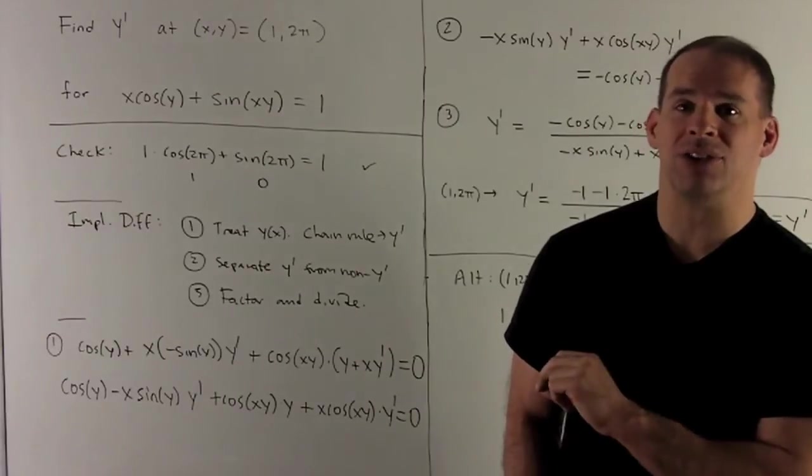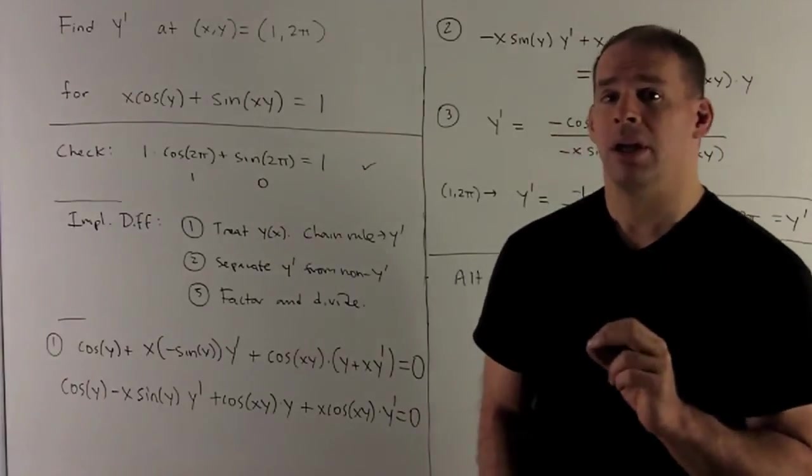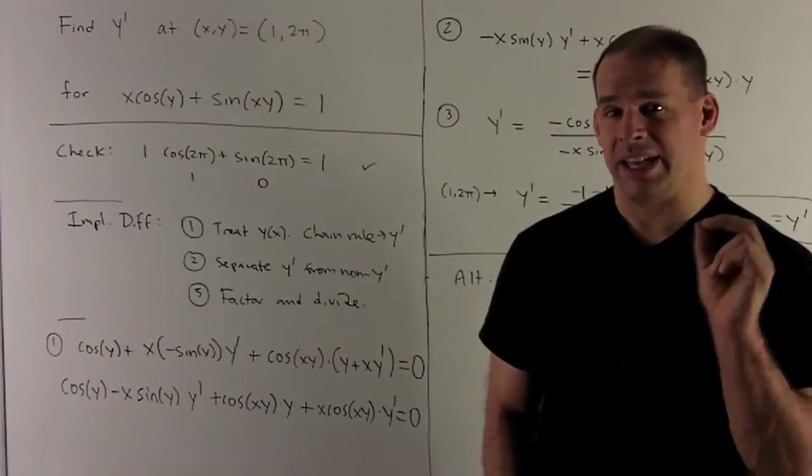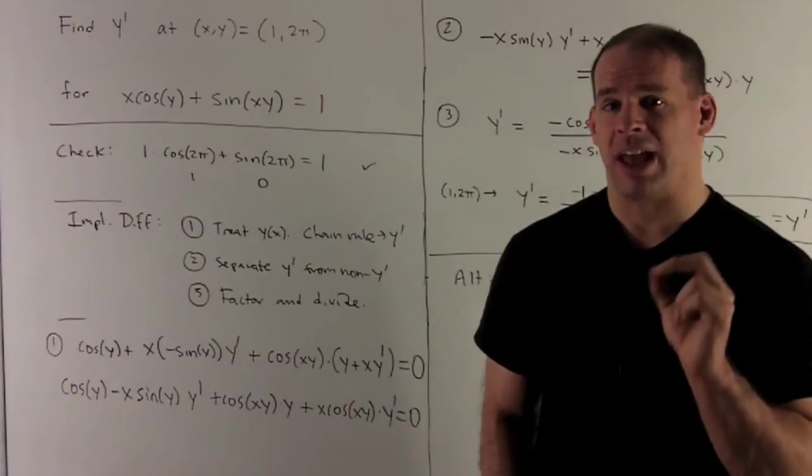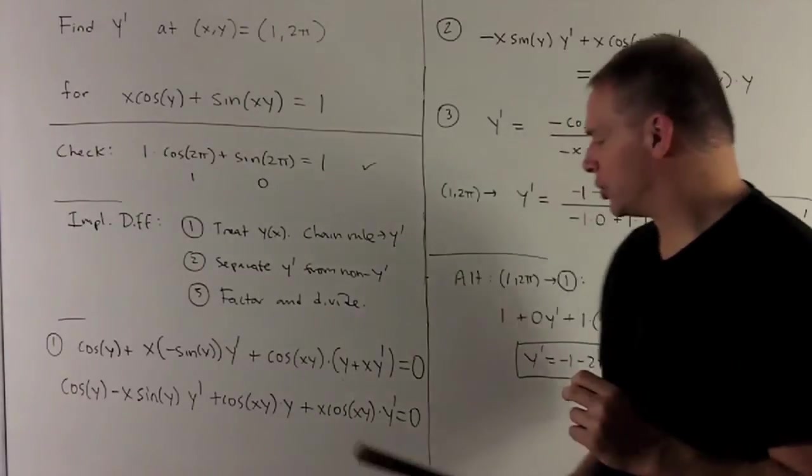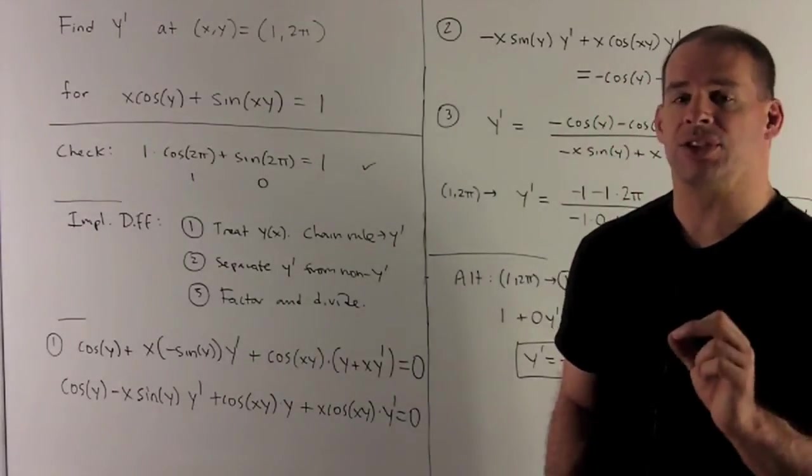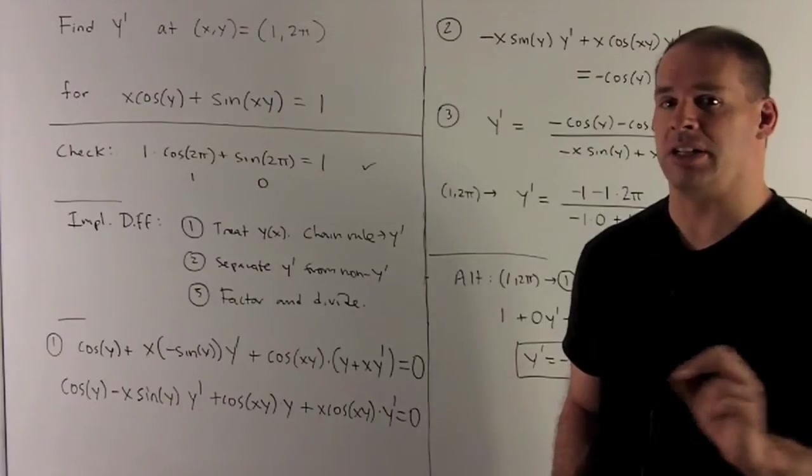And then on the other side, derivative of 1 with respect to x is 0. So that's going to be all the taking of derivatives. Now we're just left with algebra. So the first thing I want to do is to expand. We're just going to get rid of these parentheses here. So have everything as it is with no parentheses, nothing to collect.